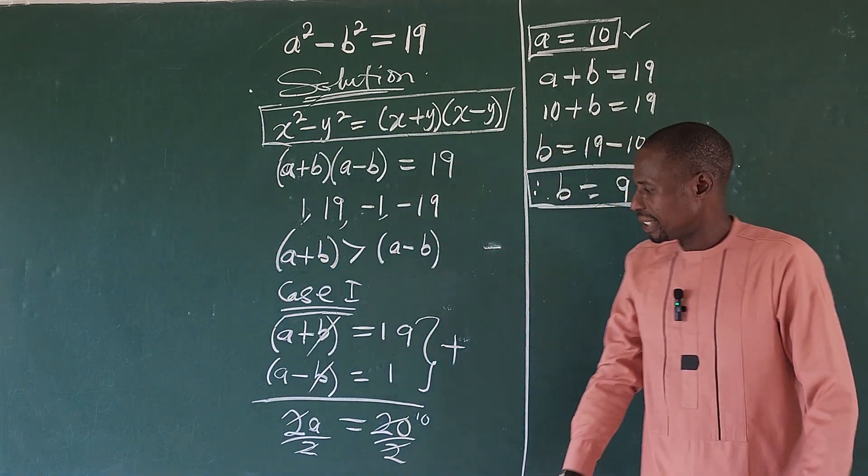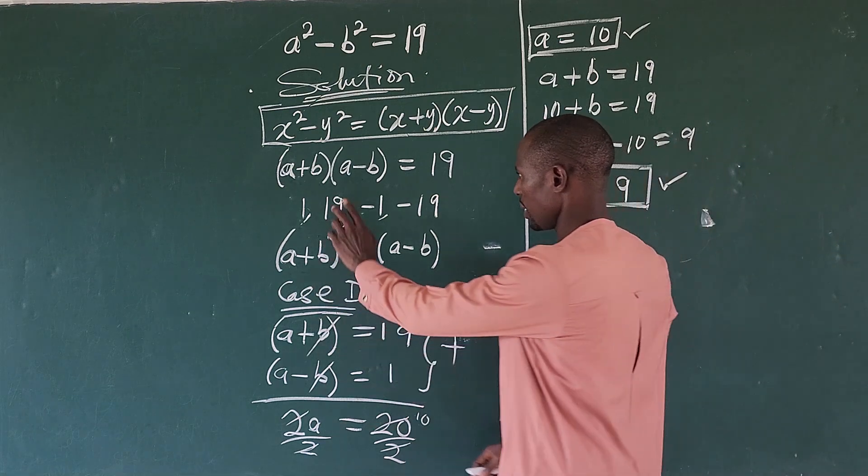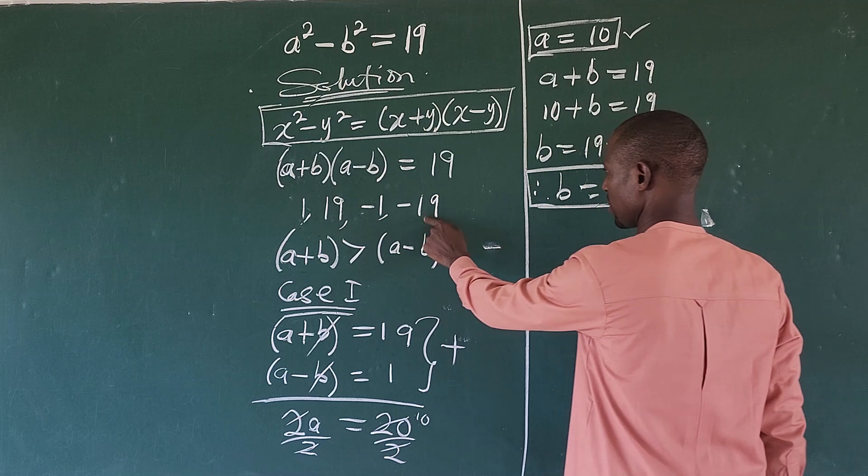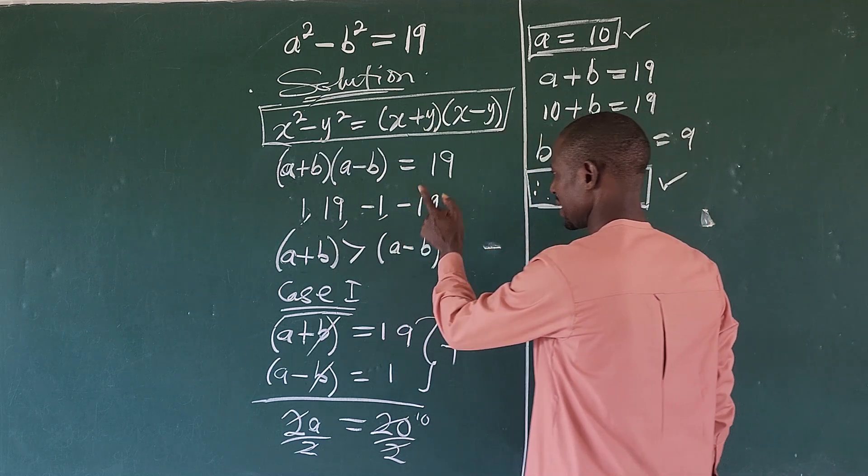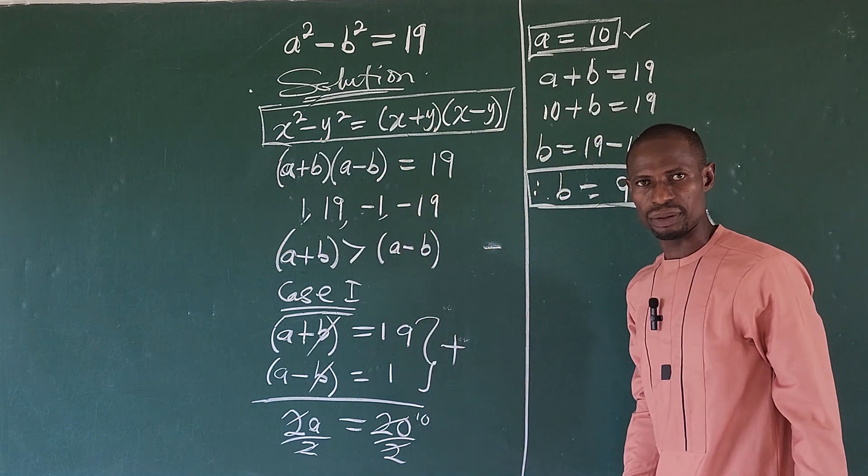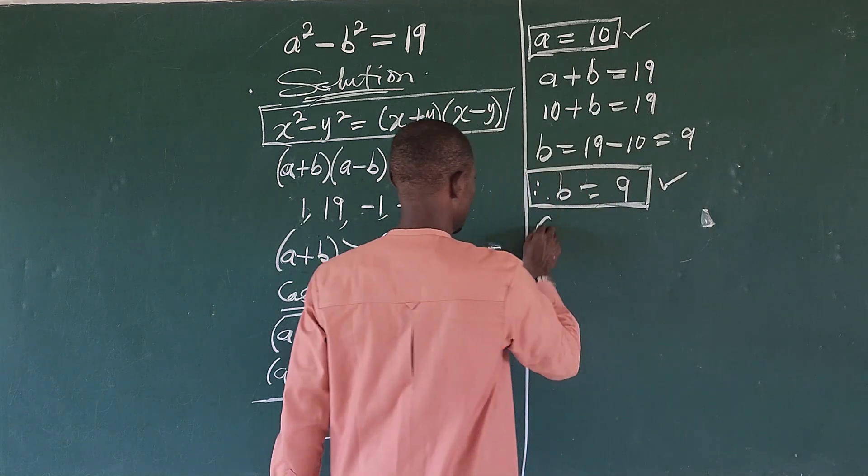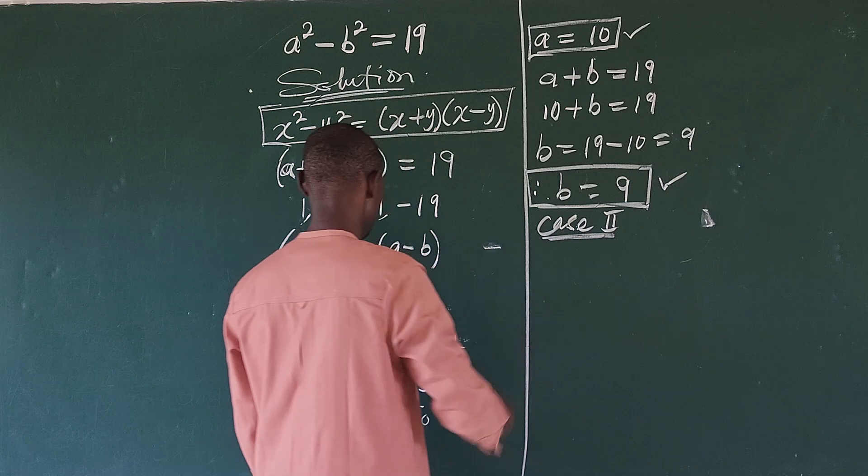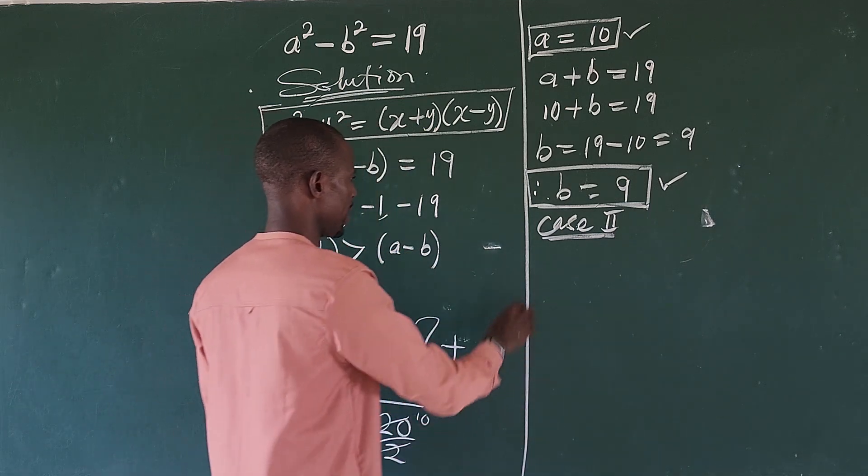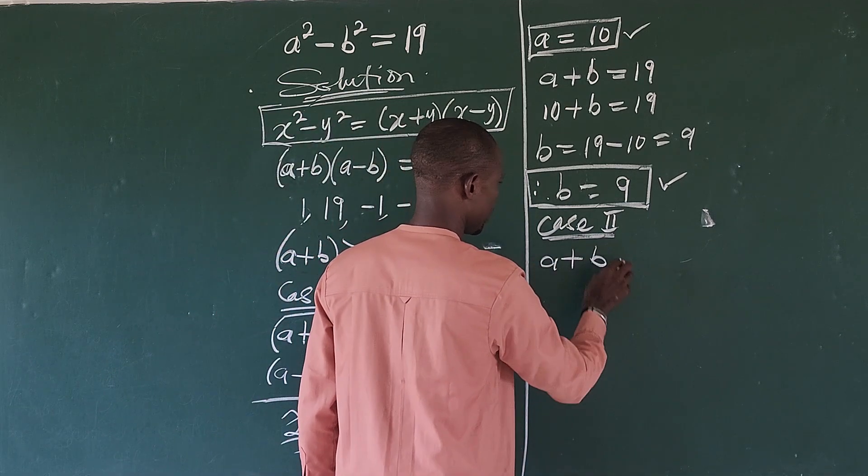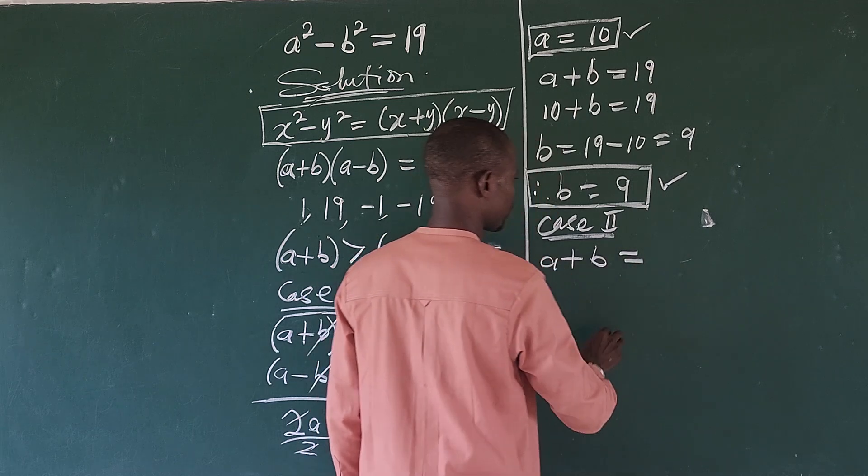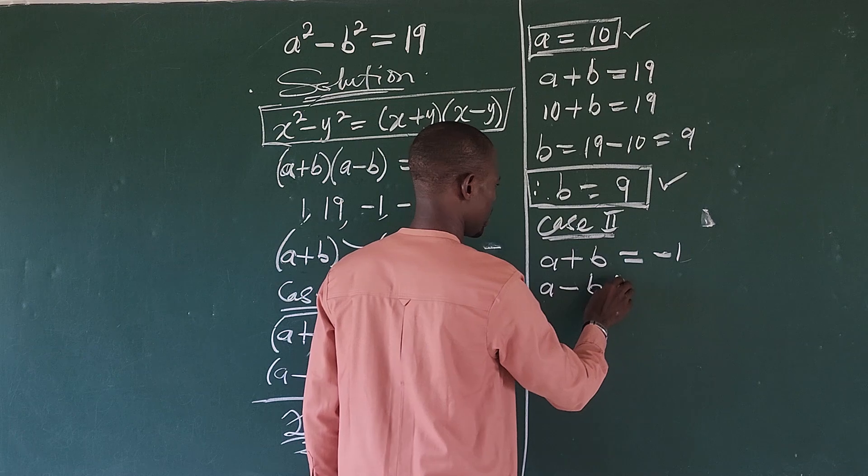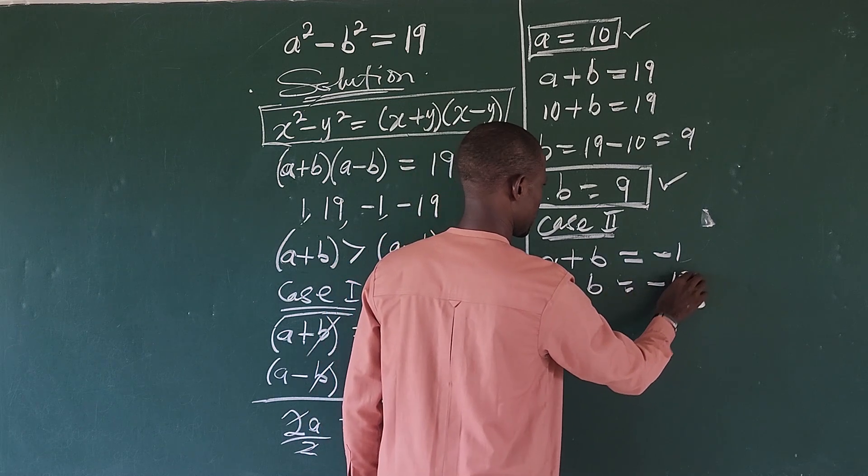Now we check the next case scenario, which is this to take -1 and this to take -19 because -19 is smaller than -1. Right? So we take our case 2. So for case 2, we're going to have a+b equal to -1, then a-b will now be equal to -19.